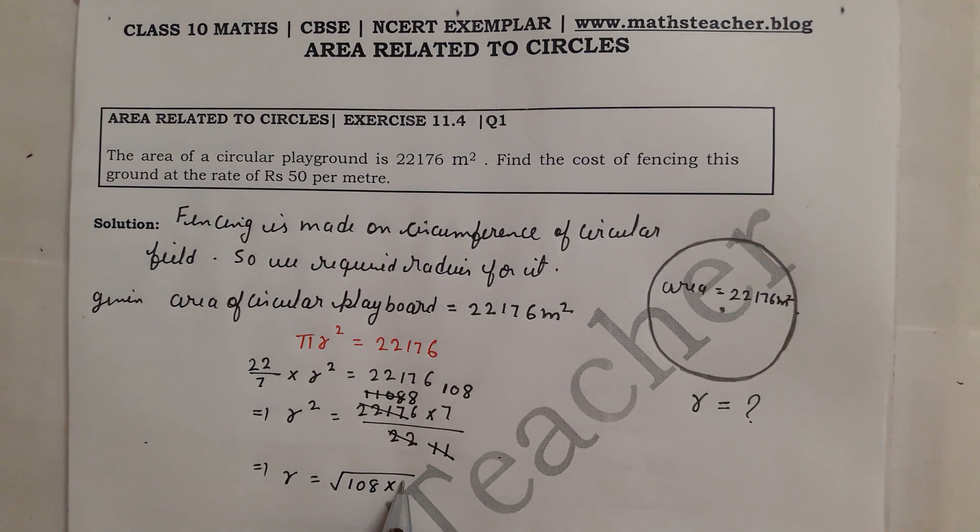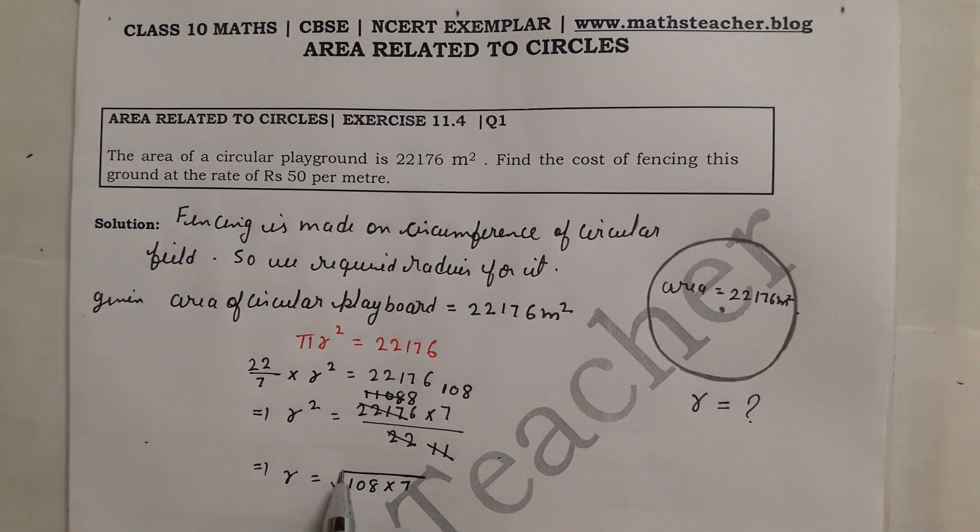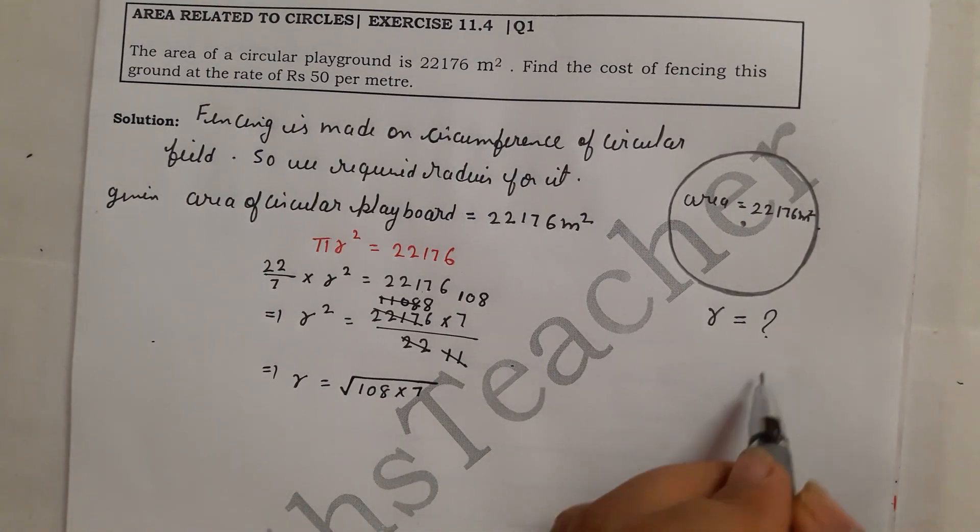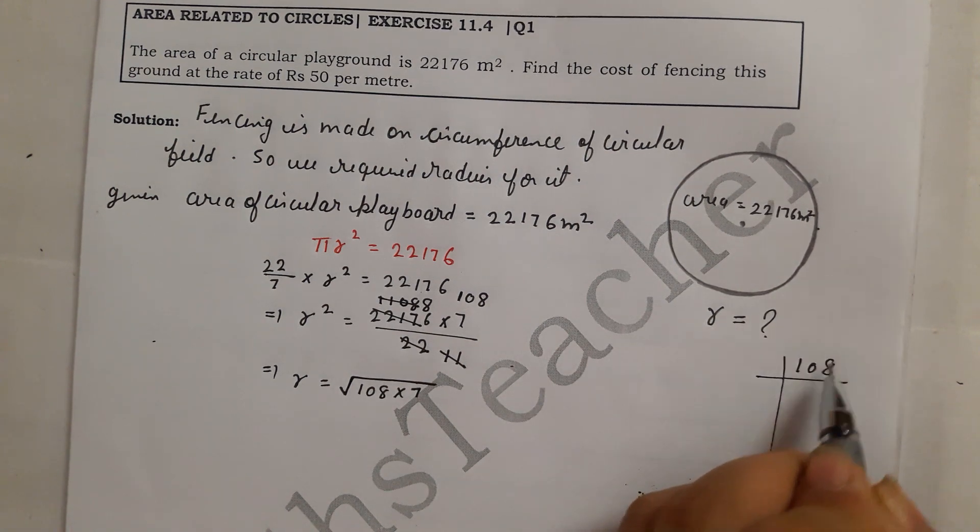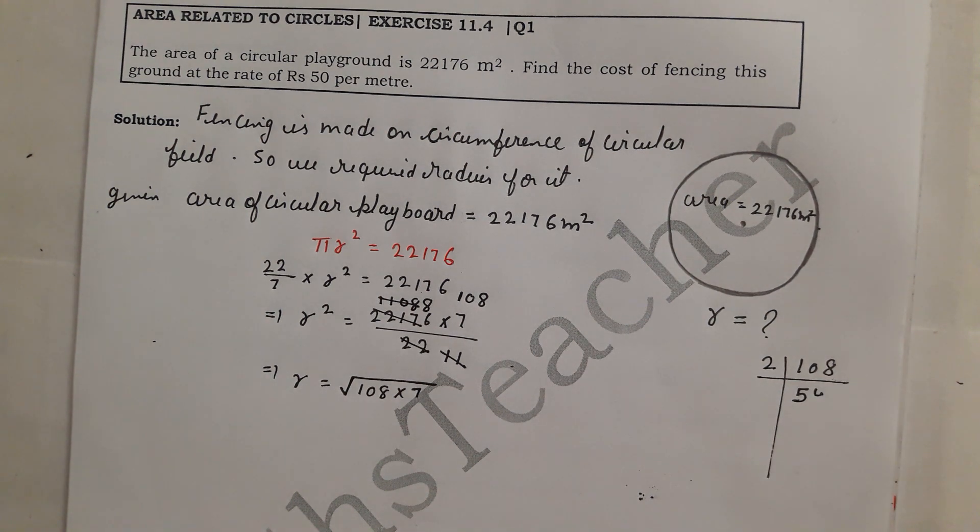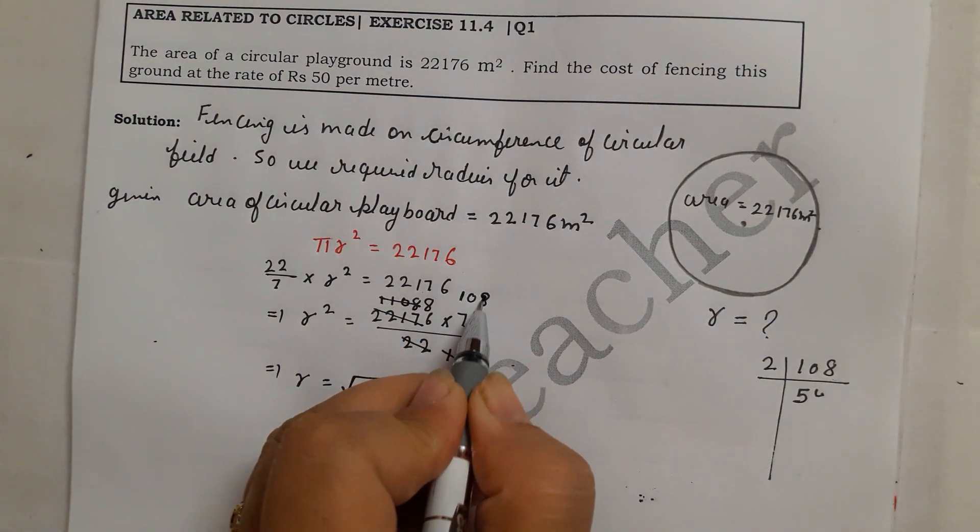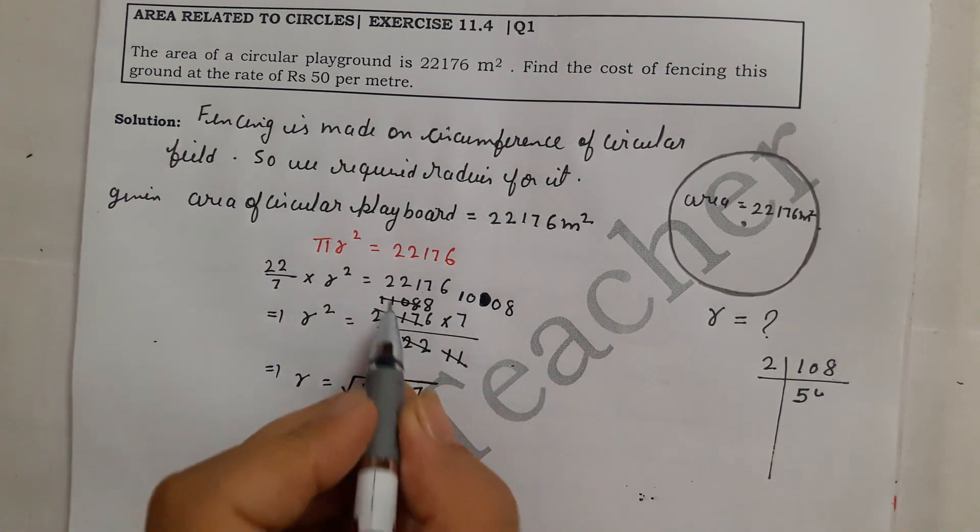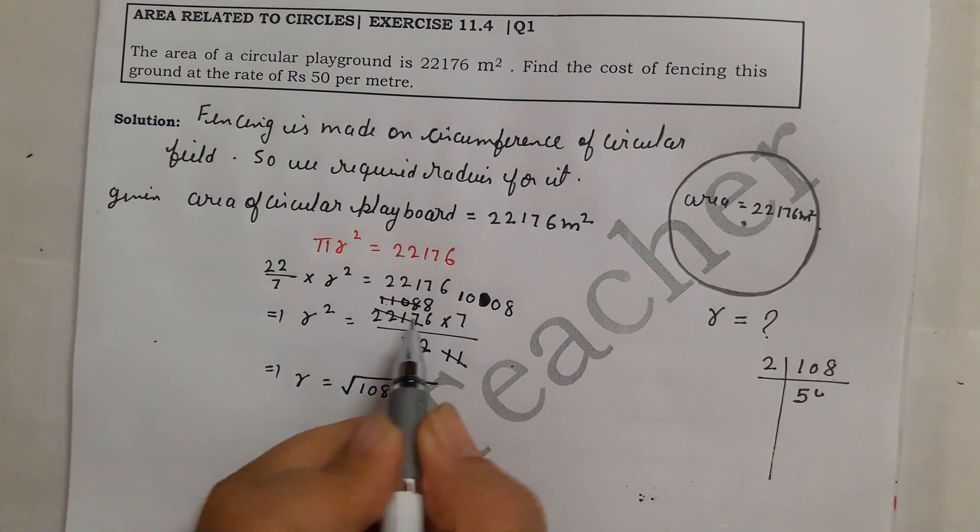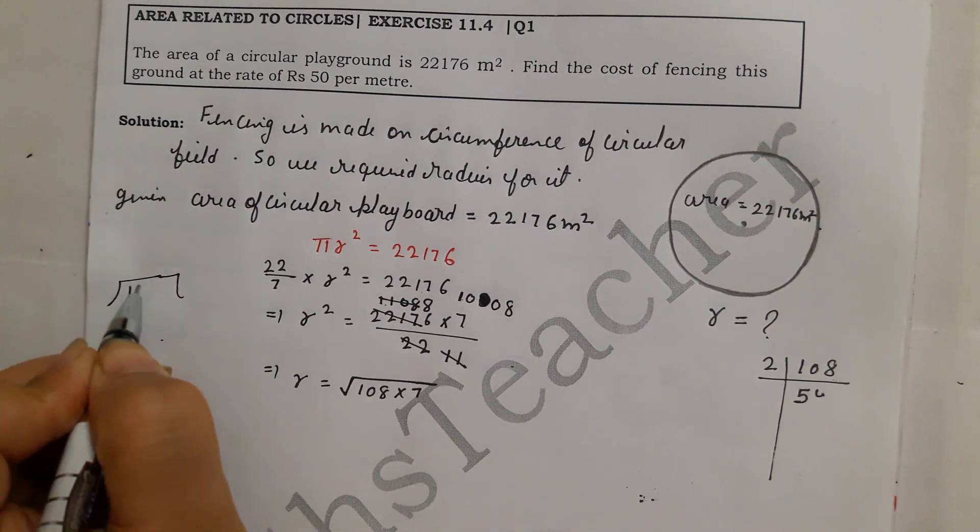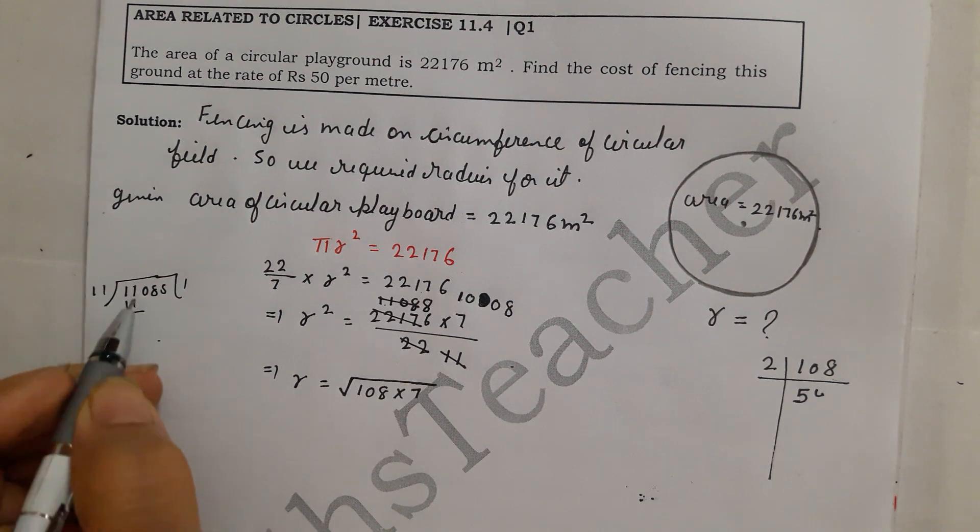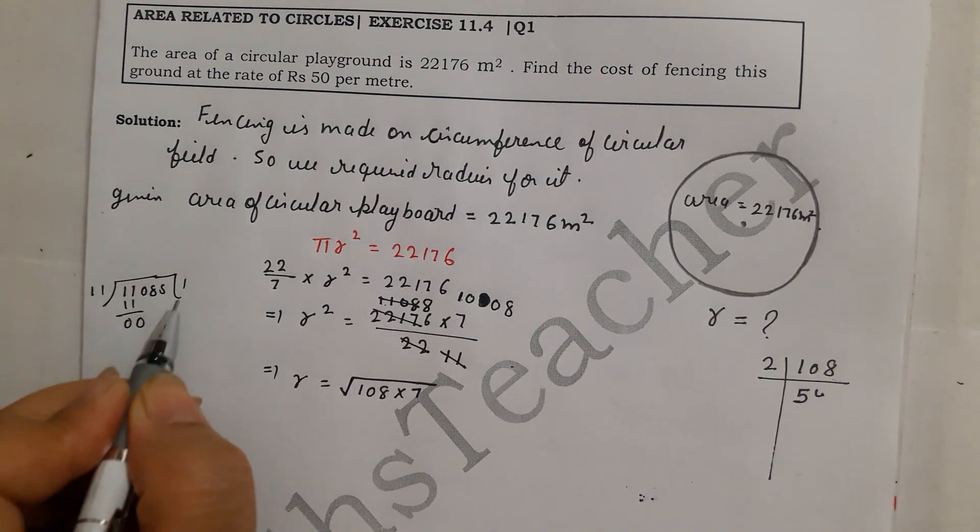So here you need r, so r is going to square root - there will be plus minus two signs, but we will take the positive sign because the radius of a circle is positive. Now we have to take the square root, so 7 will not be a perfect square, so we will factor 108 into pairs. 2 goes 54 times, 2 goes 27 times, so we continue factoring. When 11 goes one time, this is 0 as it is, then 8 will not come to the table so we will take one more here.